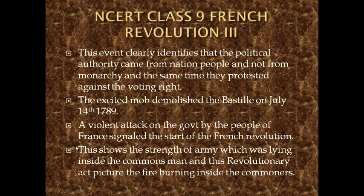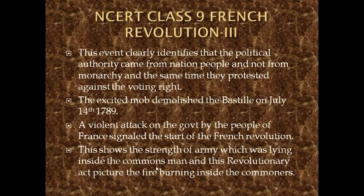This revolutionary act pictured the fire burning inside the commoners — the middle class people who had been burdened with taxes and worked in slavery. It showed the strength of the people's army lying within the common man. When their demands were not met, they declared themselves the National Assembly and the excited mob directly attacked the Bastille fortress.